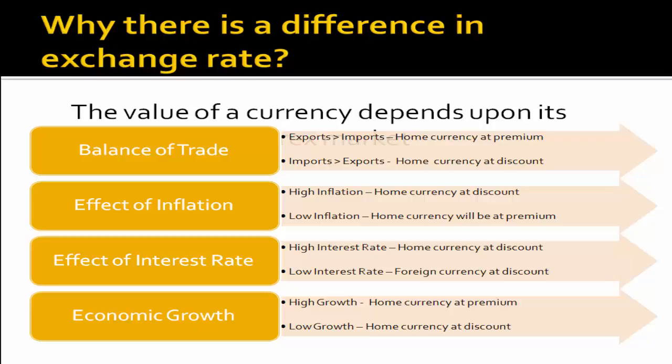In an economy, if the balance of trade is unfavorable — which means imports are more than exports — the demand of foreign currency is more than the demand of home currency, so the prices of the foreign currency will rise. In such a scenario, the home currency will be at discount. Likewise, if there is a favorable balance of trade — exports more than imports — the home currency will be at premium because its demand is more.